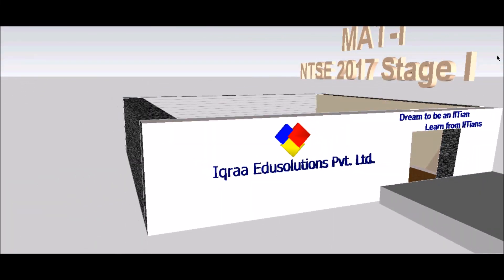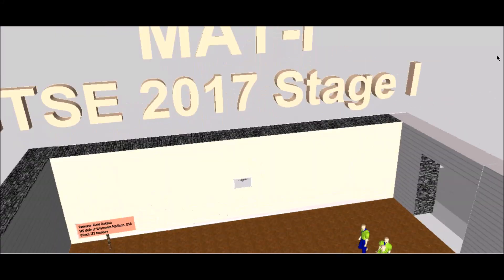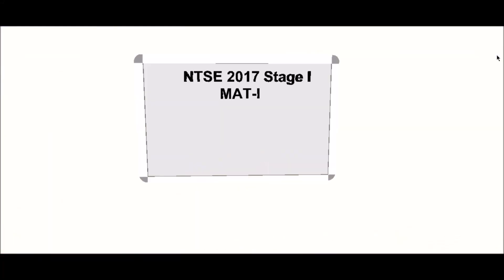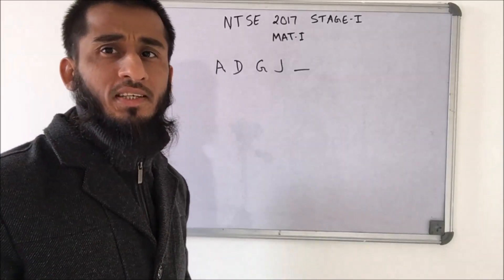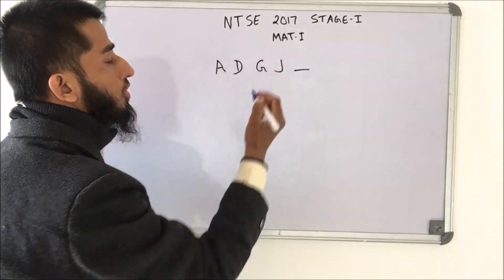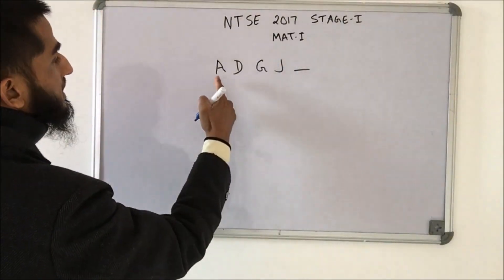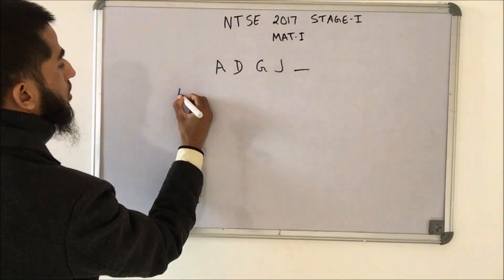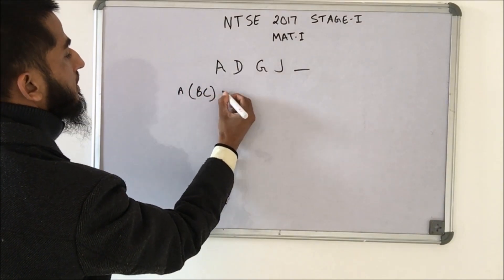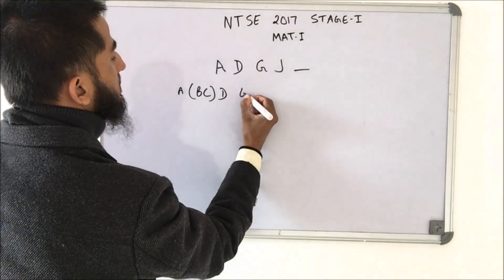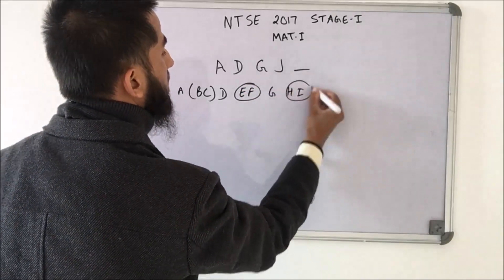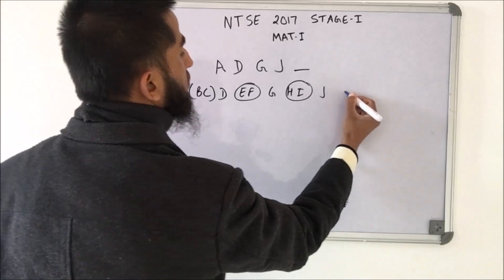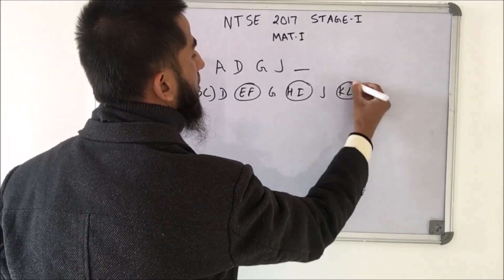Let's go to NTSC 2017 Stage 1 Mental Ability Discussion Session. We have a series here: A, D, G, J, and we need to find out the missing terms. Between A and D we have B, so we have A then BC then D. Then we have missing terms EF, then G. Then we have missing terms HI, then J. So we will have missing terms KL and the last term will be M.